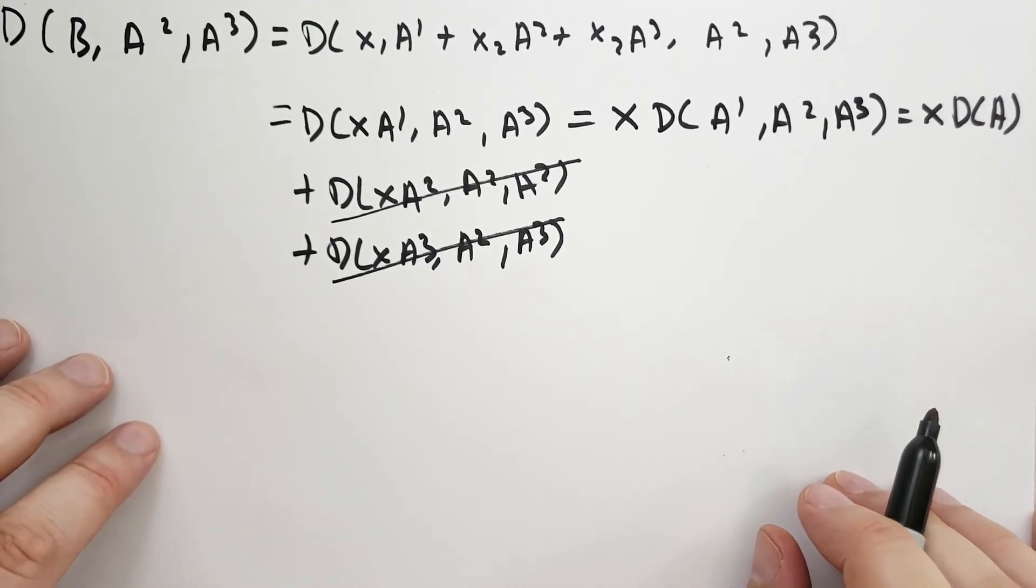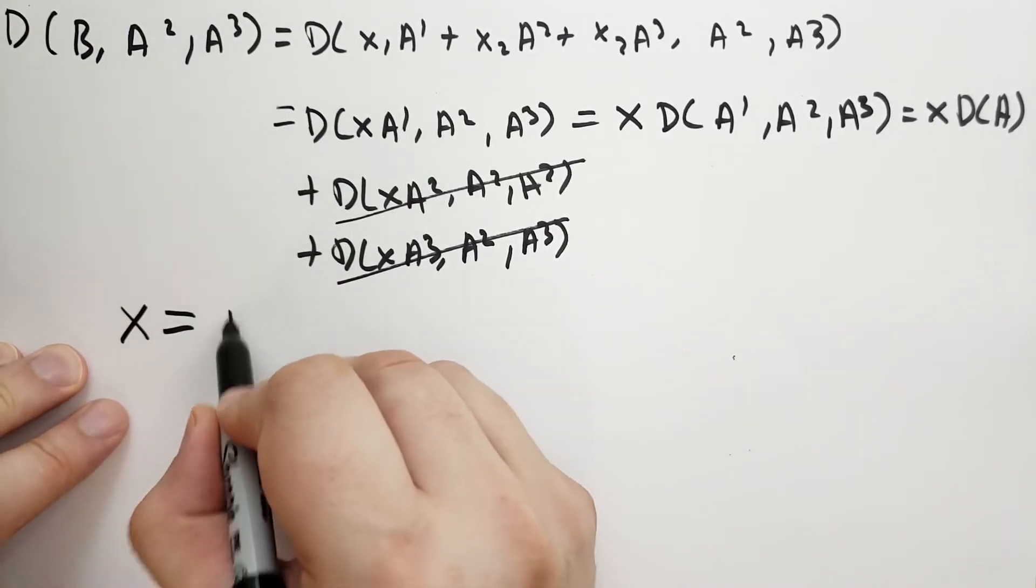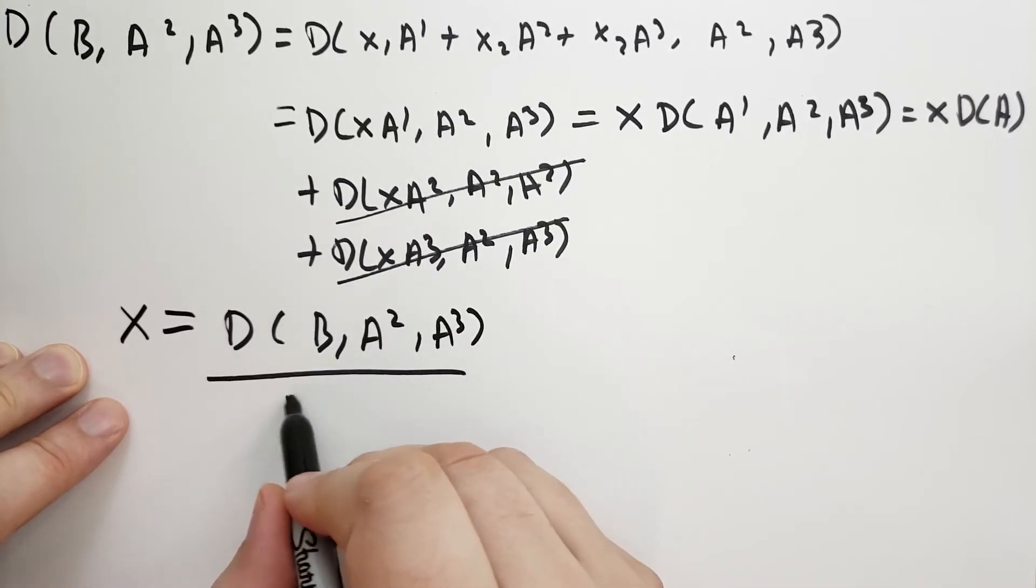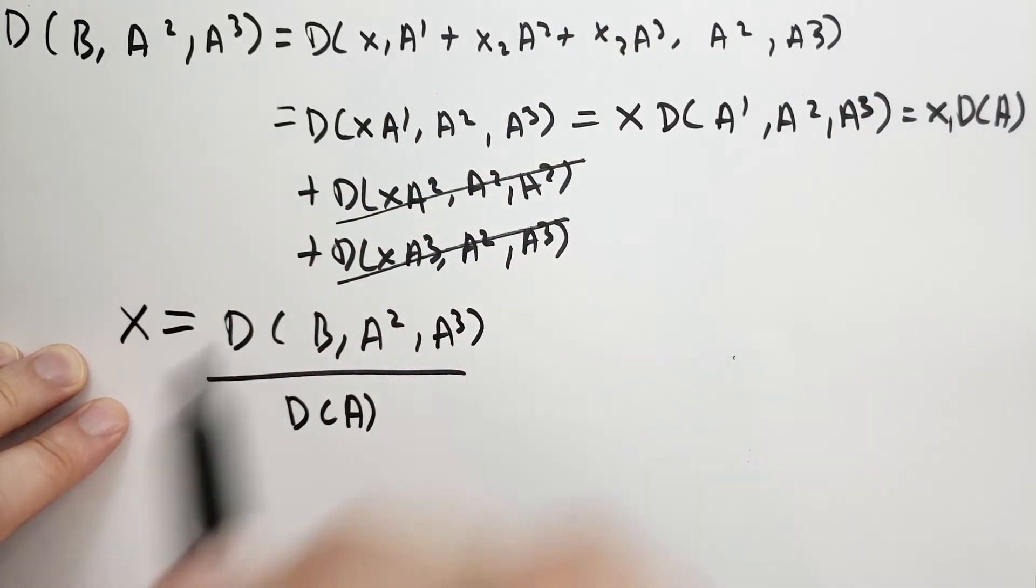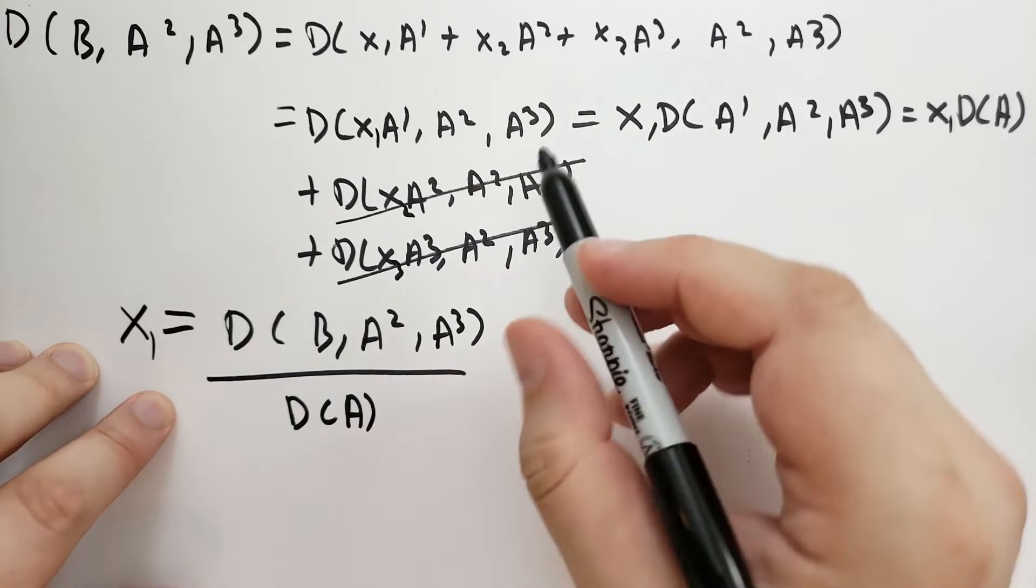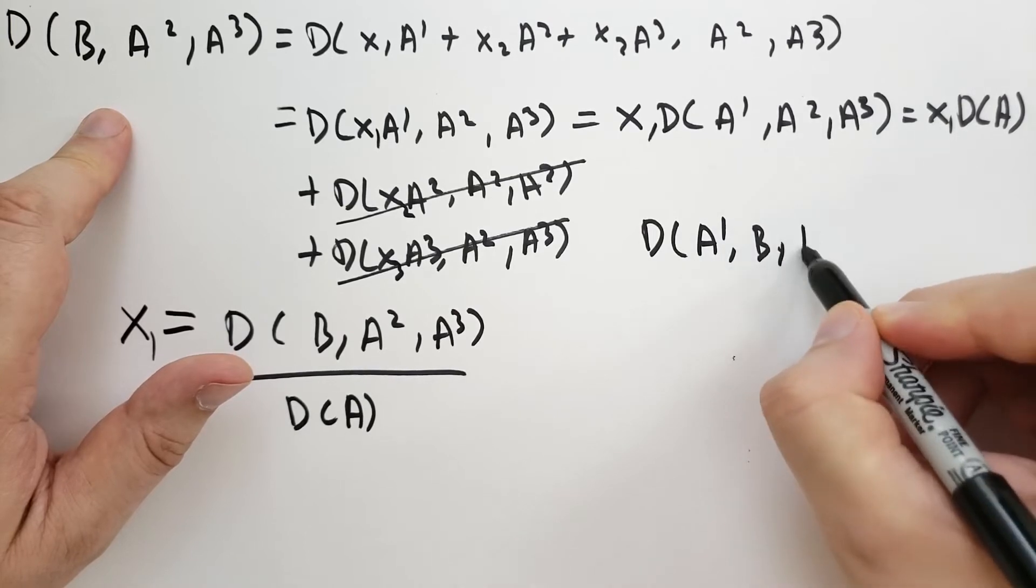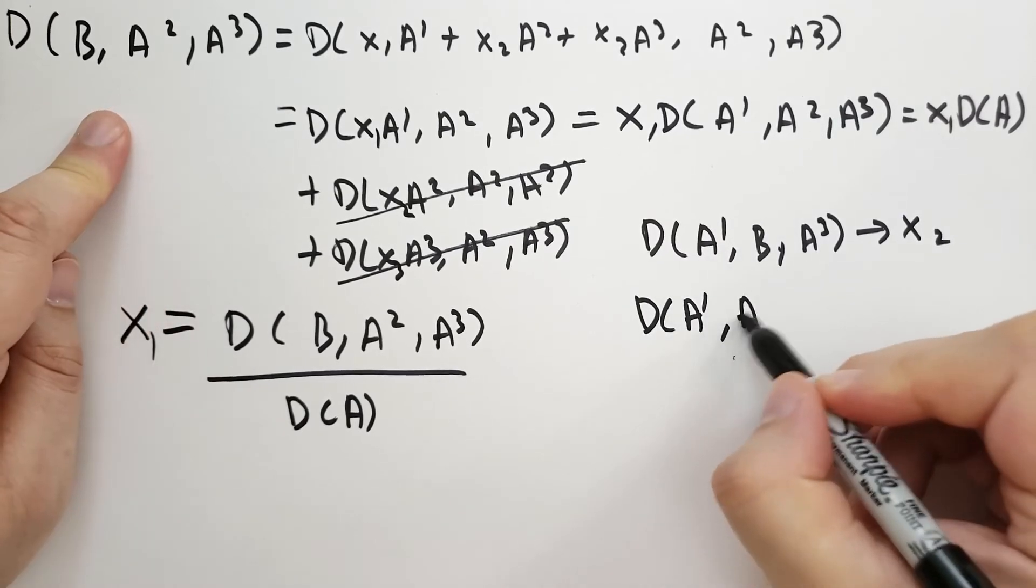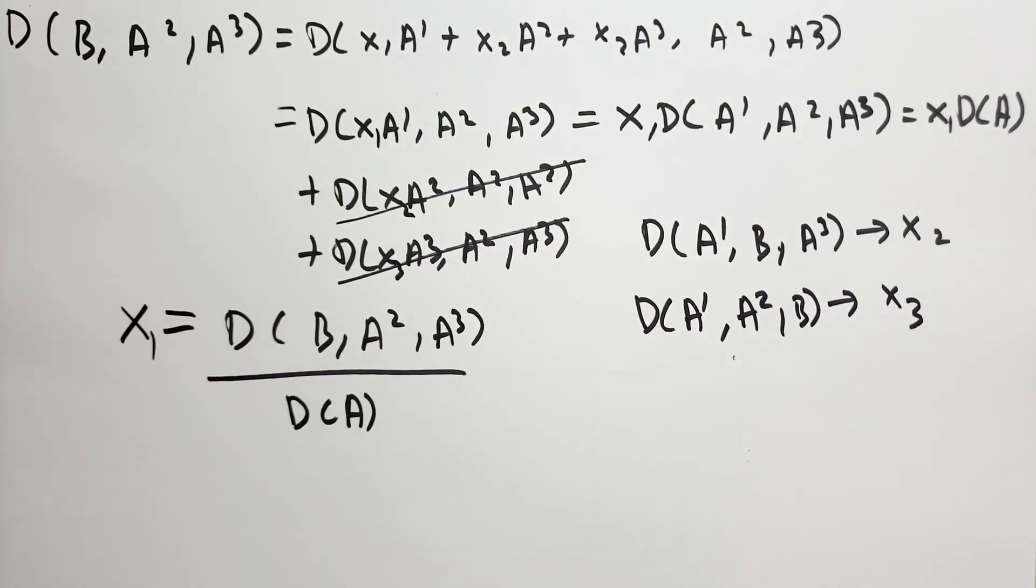In the end, I hope you guys are able to see the top of this page. I'd be really frustrated if you didn't get to see it. So we determined that X1 equals the determinant of (B, A2, A3) over the determinant of A. And if you wanted to solve for X2, then you would use the determinant of (A1, B, A3) over det(A). If you wanted to solve for X3, you would use det(A1, A2, B) over det(A). So that's rather straightforward, a rather simple proof.